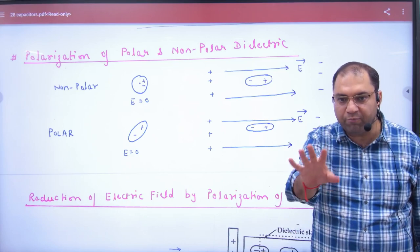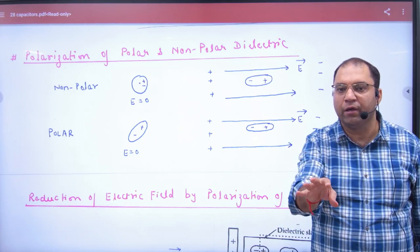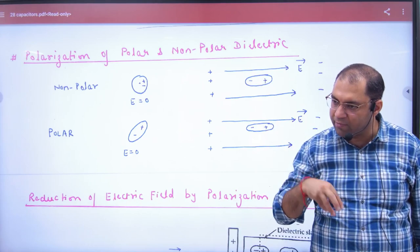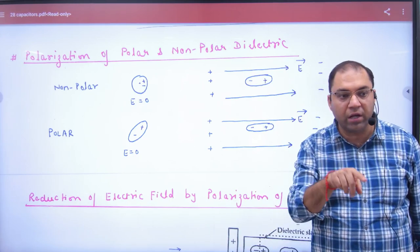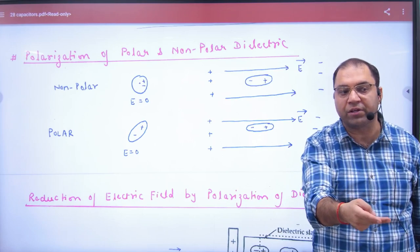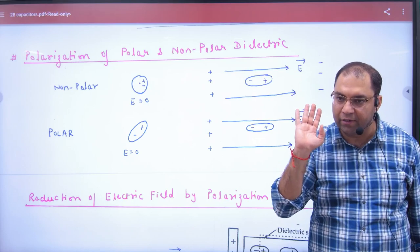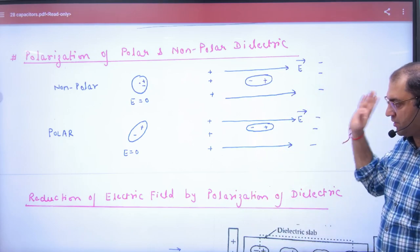We call this process polarization. What is the meaning of polarization? Making something polar. Non-polar becomes polar, polar becomes more polar when we apply electric field. Polarization.